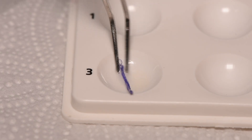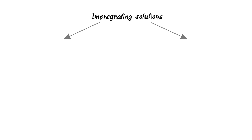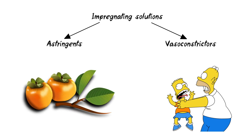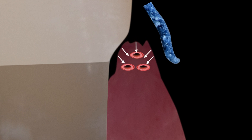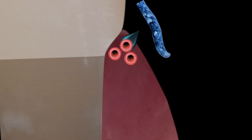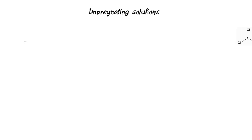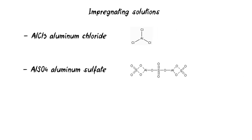Impregnation can be made at the factory or performed by yourself. Solutions used for impregnation can be divided into two groups: astringents and vasoconstrictors. Astringents cause protein coagulation and reduce cell permeability, thereby reducing gum vascularity. Vasoconstrictors cause spasm of the unstriated muscle of the vessel, narrowing it.